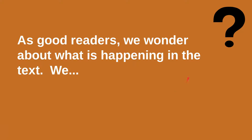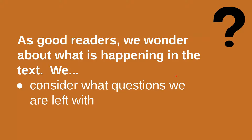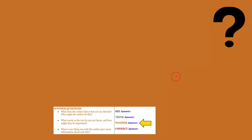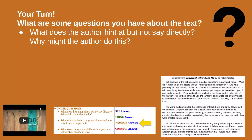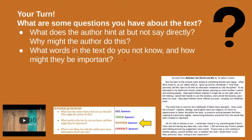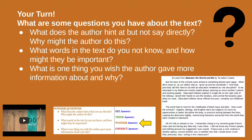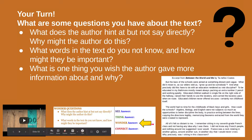For 'wonder': as good readers we wonder about what's happening in the text and consider what questions we are left with. You have three options: option one — what are some questions you have about the text, what does the author hint at but not say directly, and why might the author do that? Option two — what words in the text do you not know and how might they be important? Option three — what is one thing you wish the author gave more information about and why? Please pause the video and select one of those three questions to answer in the wonder section.